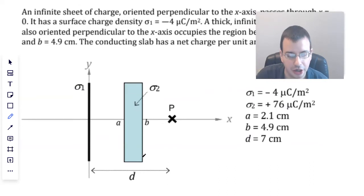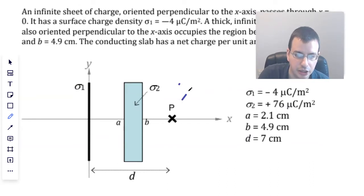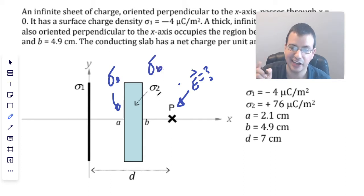And then the questions are: we want to find the electric field at that point, and then we want to find the surface charge density at A and the surface charge density at B.